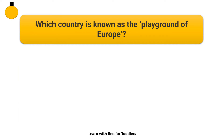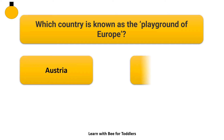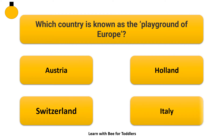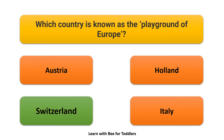Which country is known as the Playground of Europe? Austria. Holland. Switzerland. Italy. The answer is Switzerland.